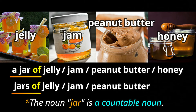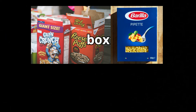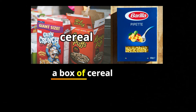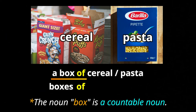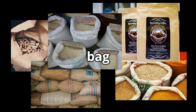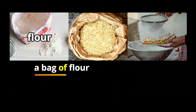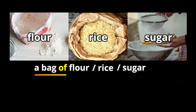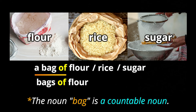Another common container is a box. Very common ones are a box of cereal or a box of pasta, and if you have more than one, we say boxes — boxes of cereal and boxes of pasta. Bags are also very popular for counting things such as flour — a bag of flour, a bag of rice, or a bag of sugar. Since 'bag' is countable, we can say bags of flour, bags of rice, or bags of sugar.